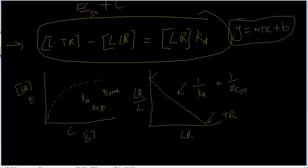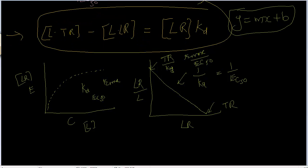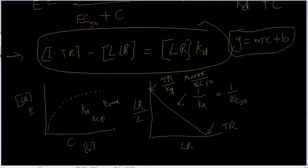This Y-intercept gives us information about TR over KD, where Emax is the maximum response and EC50 is the concentration for half-maximum effect. Let's linearize this equation right now because it's very important — most of the time you'll be using this.